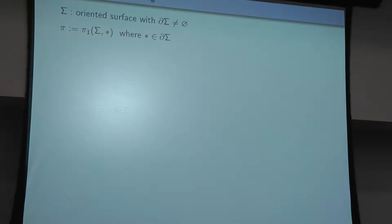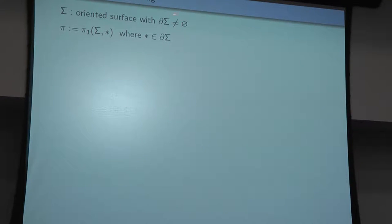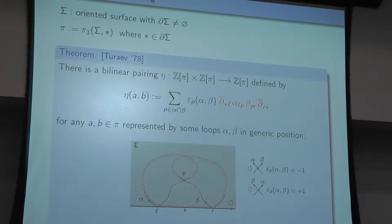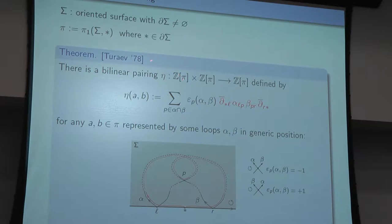There are two operations. The first one is a kind of homotopy version of the intersection form on the surface. The surface is oriented, it should have some non-empty boundary, and the fundamental group π is based at a point on the boundary. The intersection pairing is a bilinear operation on the group algebra of the fundamental group. Being bilinear, it's enough to define it for two elements a and b of π.